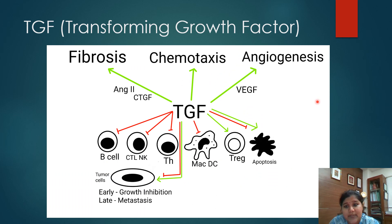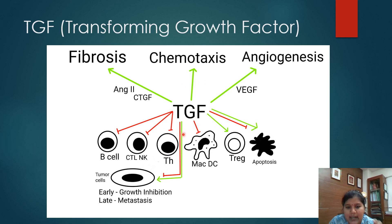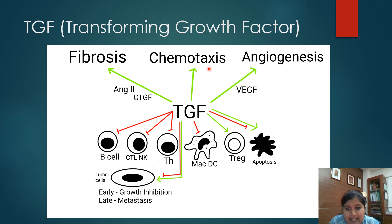The next important cytokine is transforming growth factor — an inhibitory cytokine. It inhibits B cells, T helper cells, cytotoxic T lymphocytes, NK cells, and other antigen-presenting cells like macrophages and dendritic cells. In the case of T regulatory cells — which are inhibitory — an inhibitory cytokine actually stimulates them. In apoptosis there is a biphasic response: TGF both stimulates and inhibits apoptosis depending on the situation. In tumors specifically, early stages show growth inhibition by TGF, while in late stages TGF helps in metastasis. TGF also helps in chemotaxis and angiogenesis through the VEGF pathway, and stimulates angiotensin 2 and connective tissue growth factor to favour fibrosis.